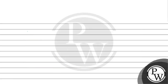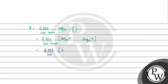So K equals 2.303 divided by 100 minutes, times log base 10 of 1 divided by 0.9, which equals 9 over 10. The 10 comes to the numerator and 9 to the denominator, giving us 2.303 over 100 times (log 10 minus log 9), which equals 2.303 over 100 times (1 minus 2·log 3). This works out to 2.303 times 0.046 divided by 100.